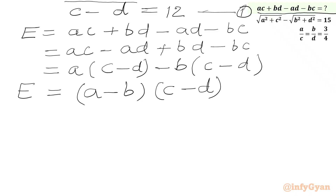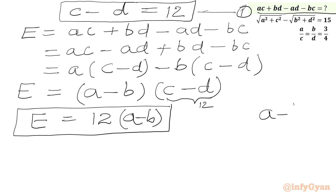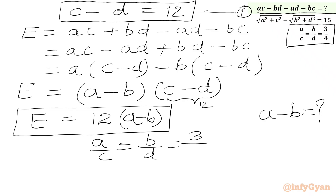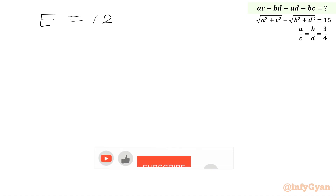We know that c minus d is 12 from equation number 1, so we write 12. Our required expression becomes 12 times (a minus b). So our target is now to find the value of a minus b. From the given condition, a over c equal to b over d equal to 3 over 4, so our required expression is 12 times (a minus b).